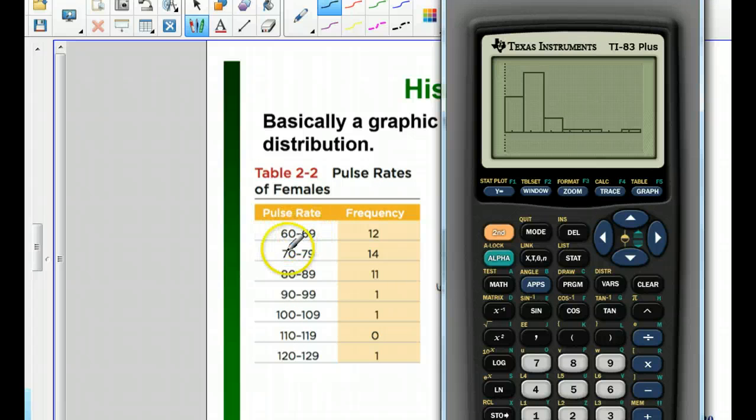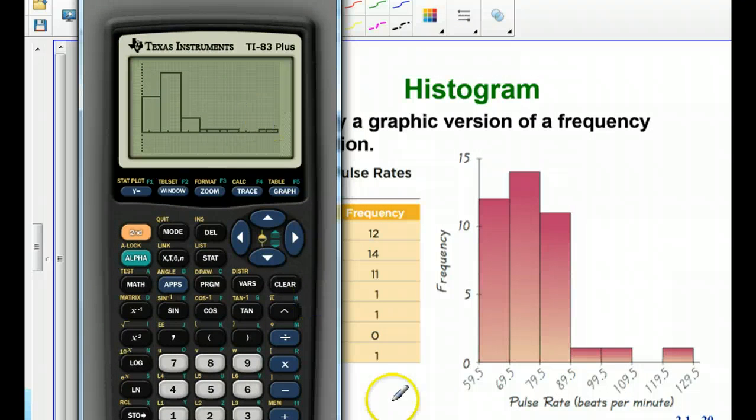We made our classes 60 to 69, 70 to 79, and we used the class boundaries on this histogram that we talked about. If I want to do it that way,